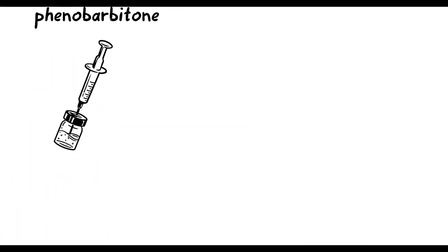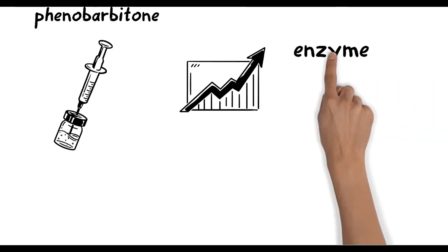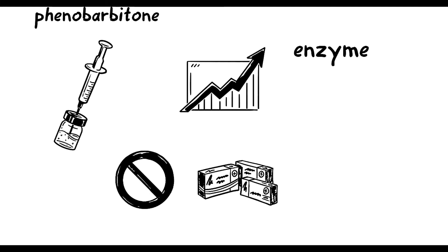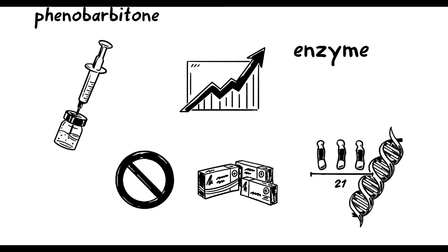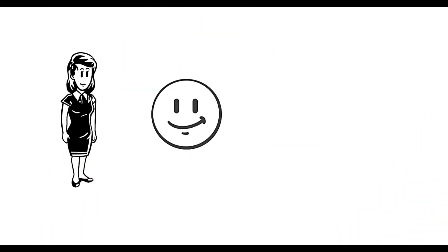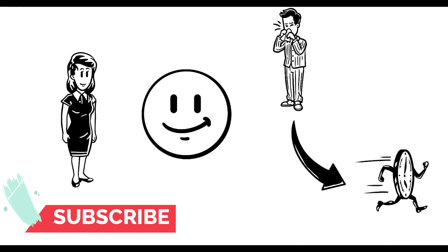Phenobarbitone can be given to increase the deficient enzyme as it is an enzyme inducer. Other than this, there is no specific treatment for Gilbert syndrome as it is an inherited cause of unconjugated hyperbilirubinemia. Emily left the hospital as the symptoms subsided in no time, thanks to modern medicine.